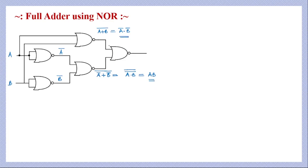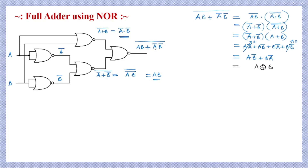A fifth NOR gate takes the outputs A·B and A-bar·B-bar, giving (A·B + A-bar·B-bar)-bar. Simplifying further using De Morgan's law, this becomes A·B-bar + B·A-bar, which is A XOR B. So the output of this five-NOR-gate circuit is A XOR B — the sum of a half adder. The output at the intermediate point A·B is the carry of the half adder.